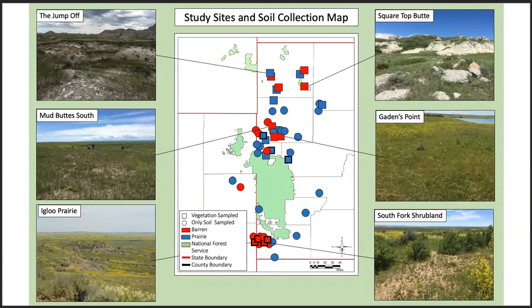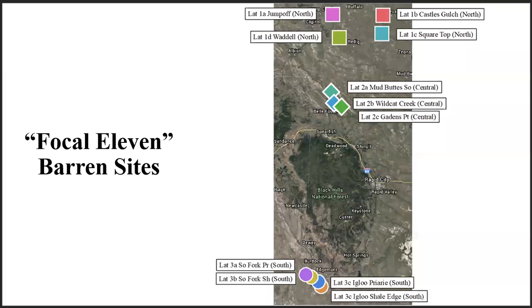Now for research methods. This is a map of the study sites. The large green area in the center is the Black Hills proper, and the small green area just northwest of it is the Bear Lodge Mountains of northeast Wyoming. We have study sites located to the north of the Black Hills from Belfouche to Buffalo, as well as to the south near Edgemont. We collected soil samples from both barren sites as well as surrounding grasslands. This zoomed-in version of the map shows the 11 focal sites, all barrens, that were studied more extensively than the other sites.